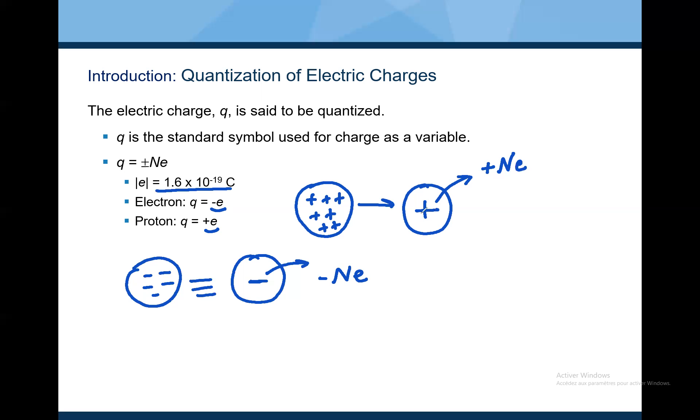And Q, what does it mean Q? Q is a charge of the object. This object has Q equal NE, plus NE. And this object has Q, we can say Q prime, equal minus NE. It's the total number of charge inside the object.